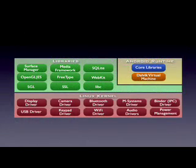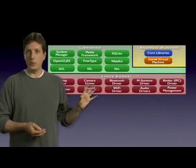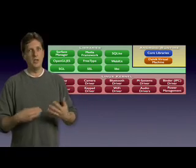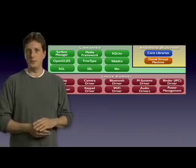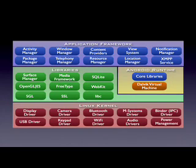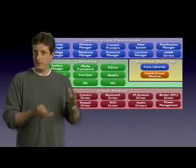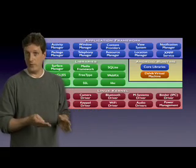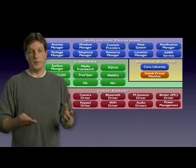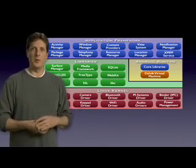The next level up from that is the core libraries. This is in blue, meaning that it's written in the Java programming language, and the core library contains all of the collection classes, utilities, I/O — all the utilities and tools that you've come to expect to use. Moving up again, we now have the application framework. This is all written in the Java programming language, and the application framework is the toolkit that all applications use. These applications include the ones that come with the phone, like the home application or the phone application. It includes applications written by Google, and it includes applications that will be written by you. So all applications use the same framework and the same APIs.